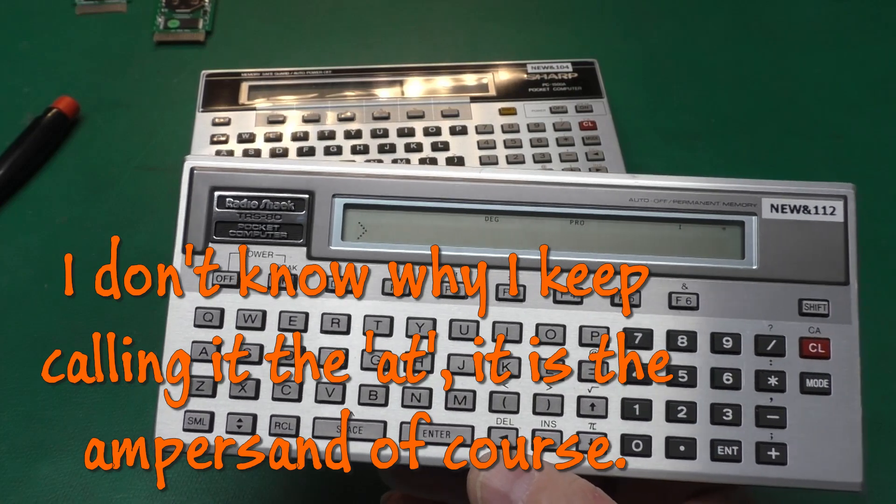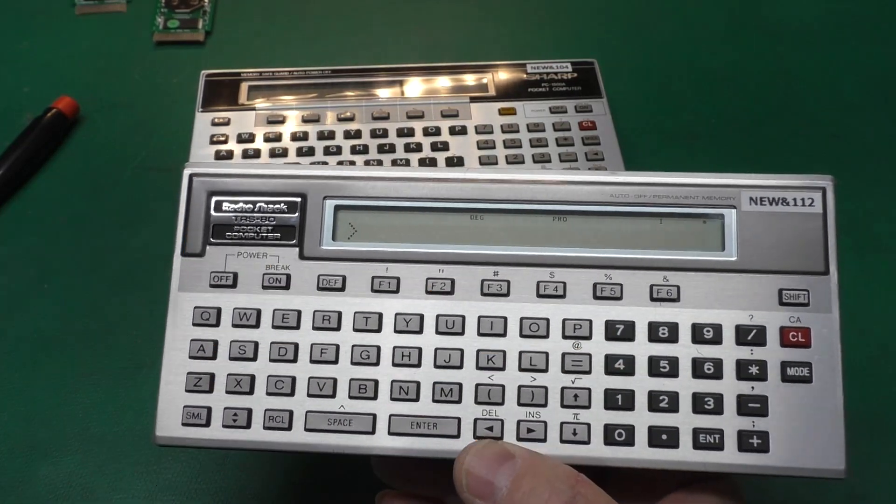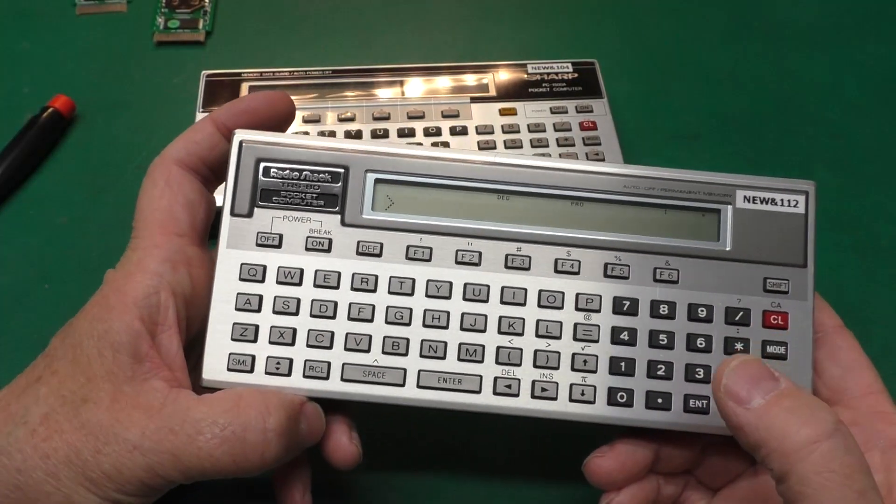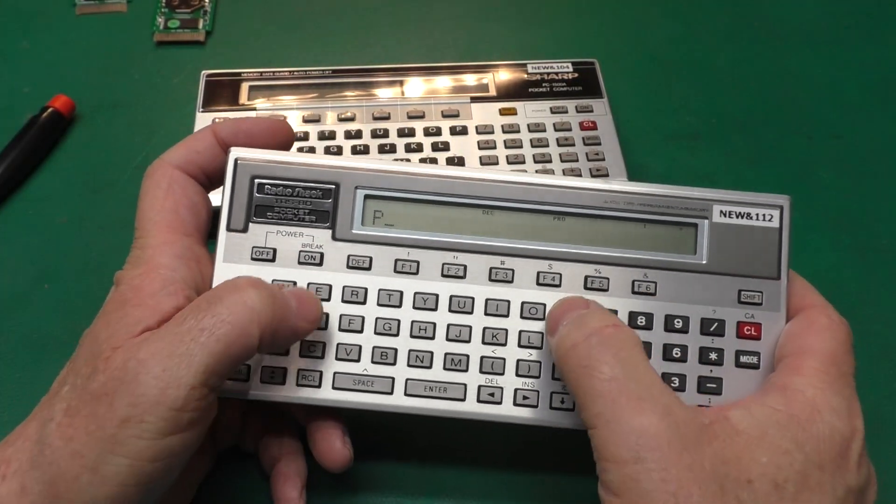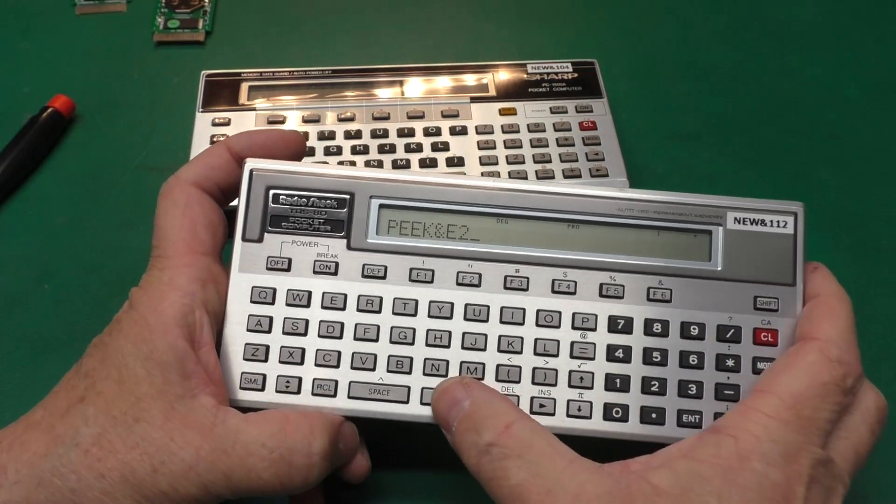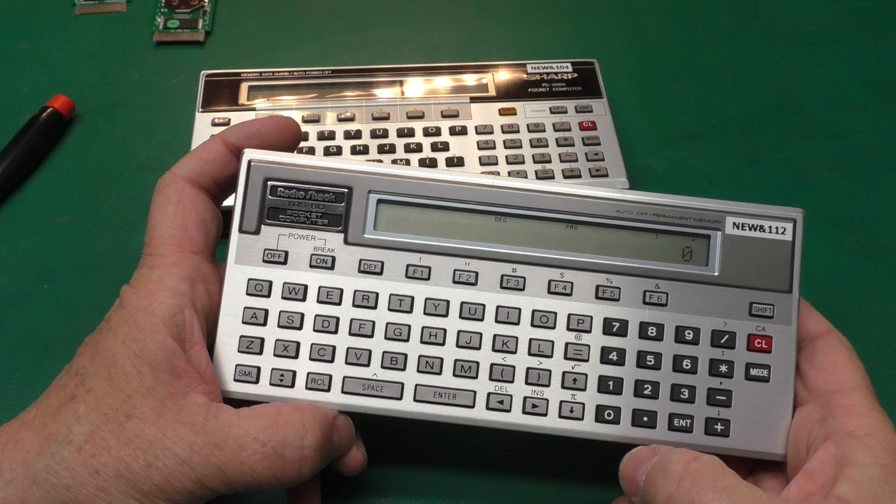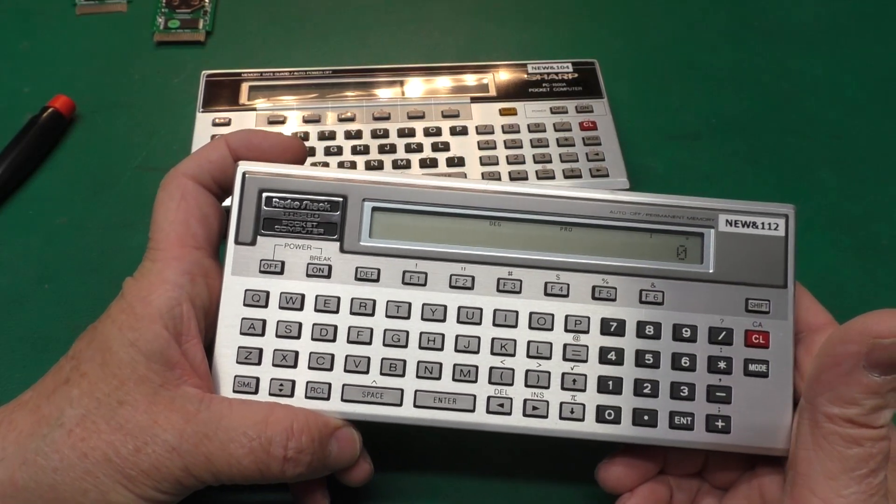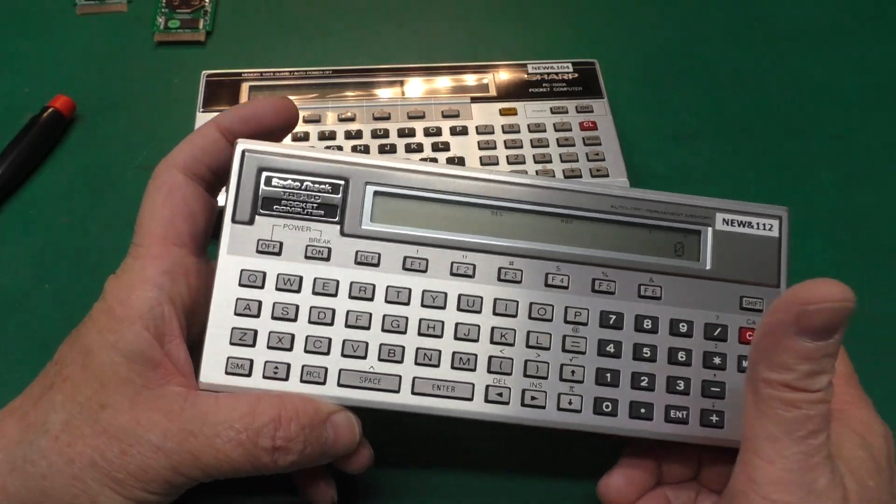And if you use X equals one, then you'd go to bank one. And if we want to figure out which bank we're on, we can do peak at E2. It tells us we're on bank zero. So you could use this just like it was a regular 16K module.